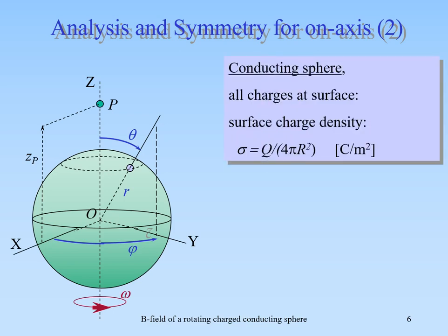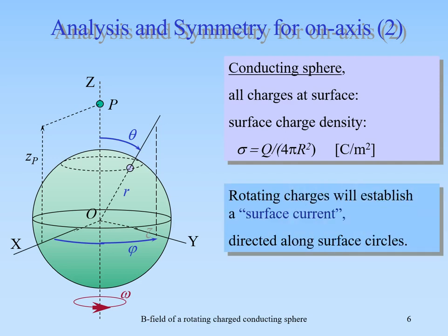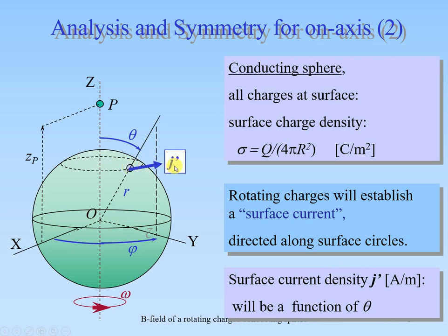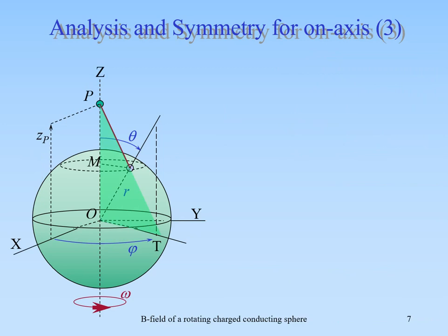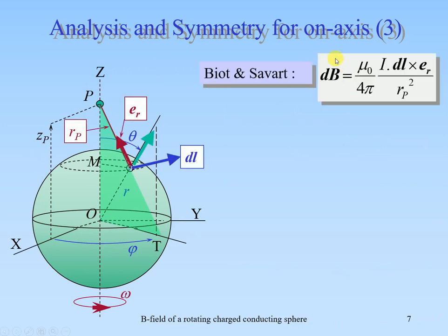For a conducting sphere, all charges are at the surface and we have a surface charge density sigma = Q / (4 pi r squared) in coulombs per square meter. The rotating charges establish a surface current directed along surface circles, and the surface current density j prime will be a function of the polar angle theta. We have Biot-Savart law in which the dB contribution is mu-naught over 4 pi times I dL, where I is the current and dL is the current element along the current.